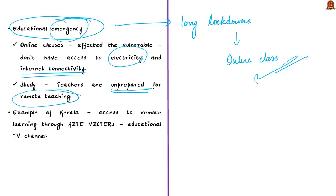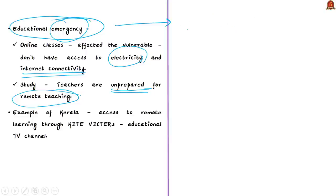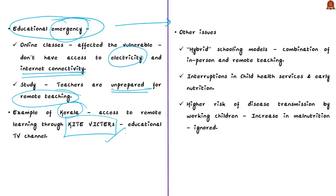In remote teaching, children are expected to submit homework and assessments through WhatsApp or text and mails. To tackle this, several state governments introduced initiatives to deliver education at every household's doorstep. For example, Kerala provided access to remote learning through its educational TV channel Kite Victors, broadcasting classes for all subjects in each grade. However, according to the authors, these digital classes are not seen as alternatives to regular classes — they just acted as a bridge to the widening academic gap. Despite state efforts, online education has proved quite challenging.